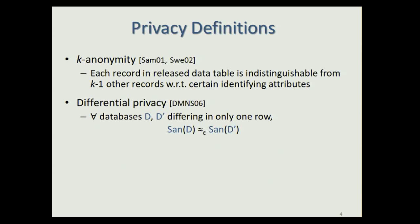An equivalent way of defining differential privacy is that whatever an adversary learns about an individual I from the mechanism, he or she could have learned from knowing everyone else in the database. However, in situations where there is correlation between individuals, such as in social networks, knowing everyone else can allow the adversary to learn a lot about individual I. So in settings with correlation, differential privacy might not be strong enough, and this issue led to the proposal of an even stronger definition called zero-knowledge privacy.